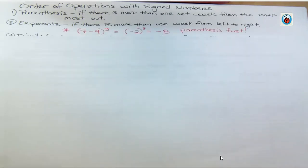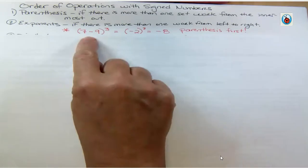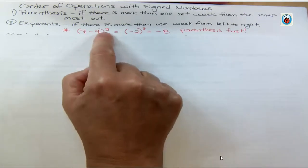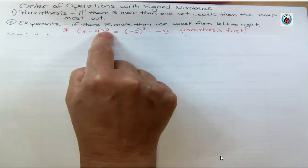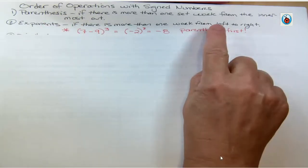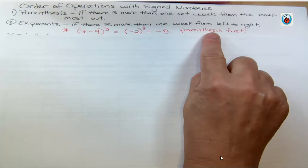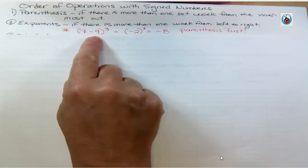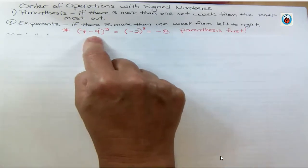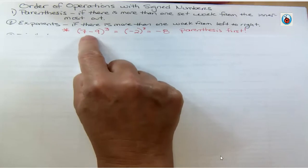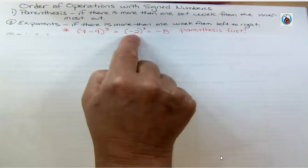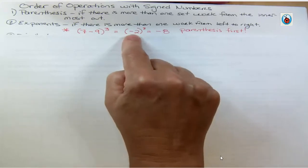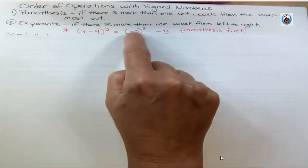One thing people sometimes get confused about is when they have a set of parentheses and then a power. Even though parentheses always come first, people try to do something like 7 to the third power minus 9 to the third power — and that's not the rule. The rule is to simplify inside: here we have 7, we take 9 away, leaving us negative 2 as our base, and then we take negative 2 to the third power.